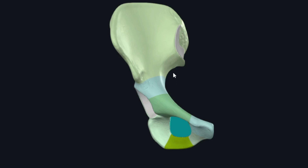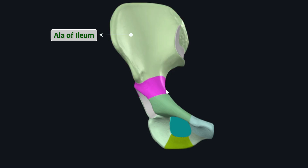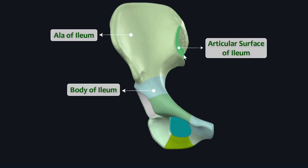The ilium has two parts. This superiorly located thin, pan-shaped part of the bone is called the ala or wing of the ilium, while this inferiorly located thick, irregularly shaped part is the body of ilium. This part of the ilium is the articular surface through which it articulates with the sacrum at the sacroiliac joint.